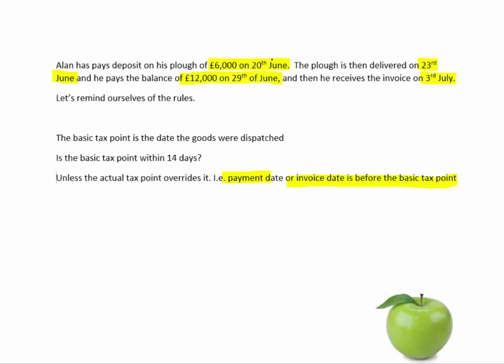In summary, the payment on the 20th of June is going to override the basic tax point on the 23rd of June, which was the date of delivery — so you've got one tax point on the 20th of June. We then received the invoice on the 3rd of July, which is within 14 days of the basic tax point, so that's going to override the basic tax point. However, Alan paid his balance on the 29th of June, so that's going to override the invoice date on the 3rd of July.